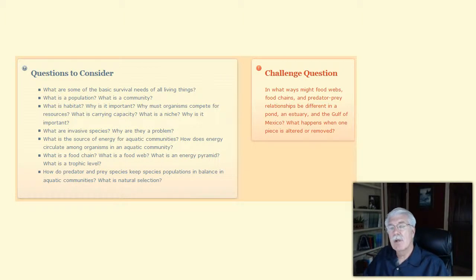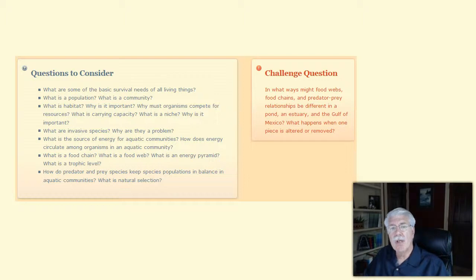And for additional consideration, here are a couple of additional questions. In what ways might food webs, food chains, and predator-prey relationships be different in a pond, in an estuary, and in the Gulf of Mexico? What happens when one piece is altered or removed altogether?